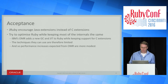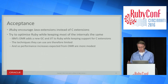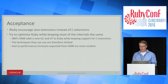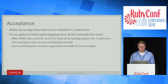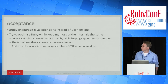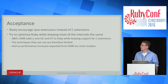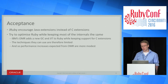Acceptance: JRuby encouraged people to write Java extensions instead of C extensions, which works fine, but as I said, if people aren't writing FFI, we can't make them write Java extensions either. We could also try to optimize Ruby while keeping the internals the same — IBM's OMR adds a new GC and JIT to MRI while keeping C extension support — but the techniques they can use are therefore very limited, and the performance increases we can expect are much more modest.